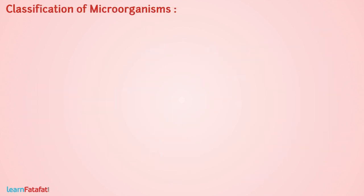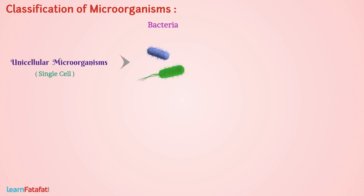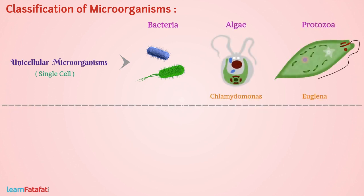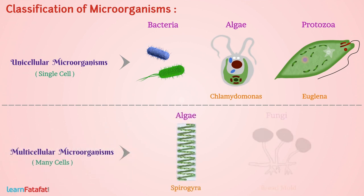Based on structure, microorganisms could be unicellular, consisting of a single cell like in bacteria, some algae, and protozoa, or multicellular, consisting of many cells like algae and fungi.